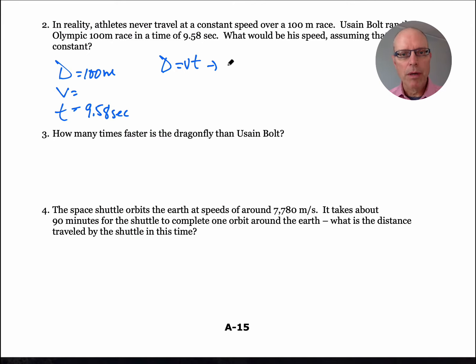We get V equals D over T. So 100 meters over 9.58 seconds, and we get that Usain Bolt went 10.4 meters per second. So fastest man alive, that's pretty quick.